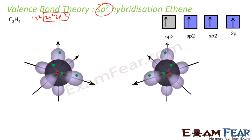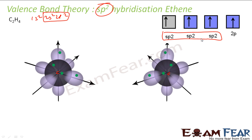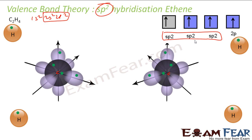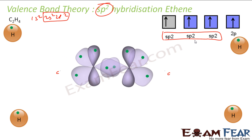One electron will move to the 2p orbital and it will form sp2 hybridization. Note: one electron moves to the p orbital, so it is forming sp2 hybrid orbitals, not sp3. After hybridization, each carbon has 3 sp2 orbitals and one remaining 2p orbital.